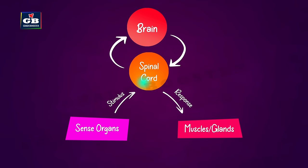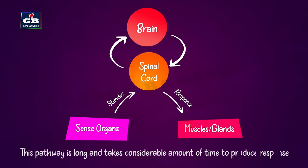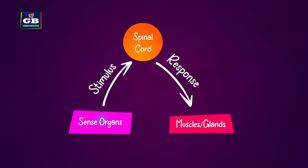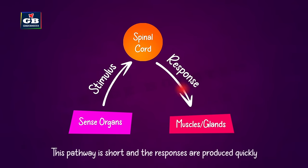In one pathway, information about the stimulus passes to the spinal cord, then to the brain. The response is generated in the brain and passes back down to the spinal cord, finally reaching the muscles. This is a long pathway and takes a considerable amount of time to produce responses.